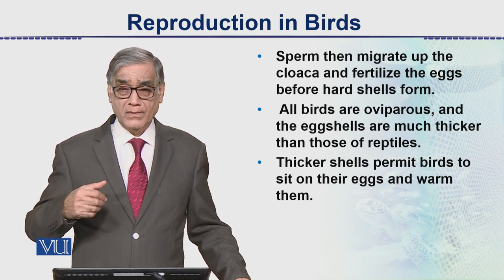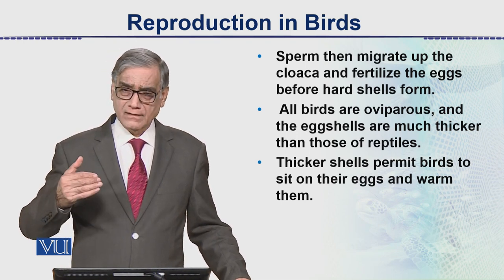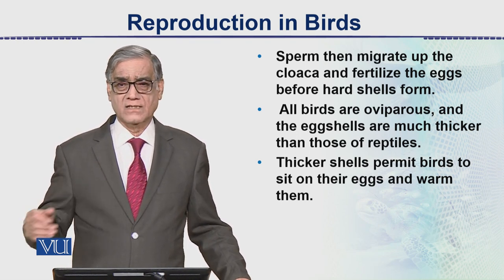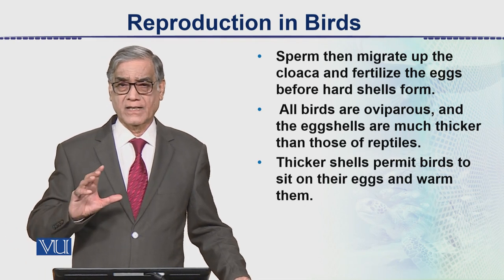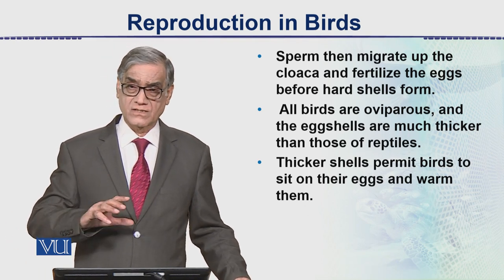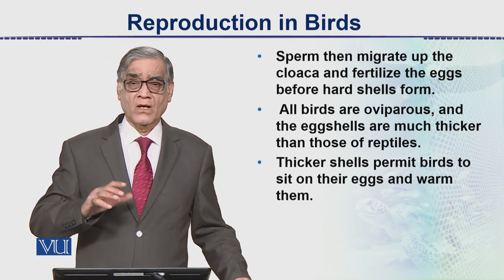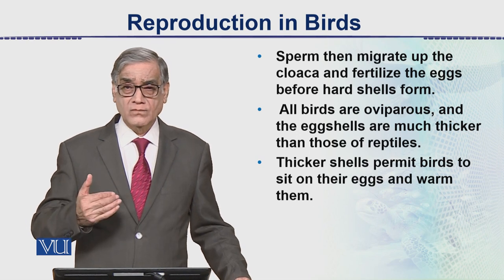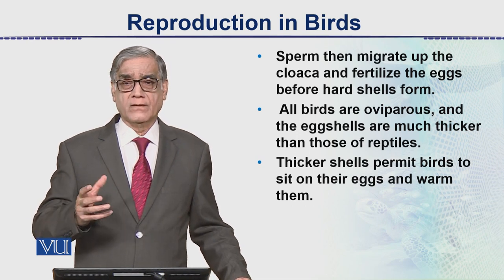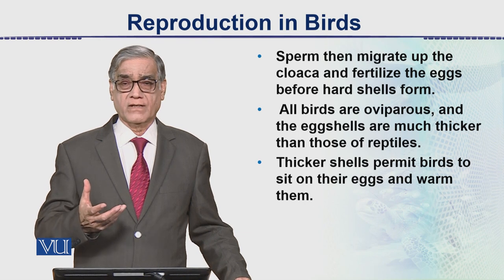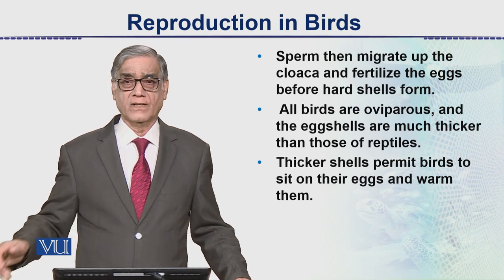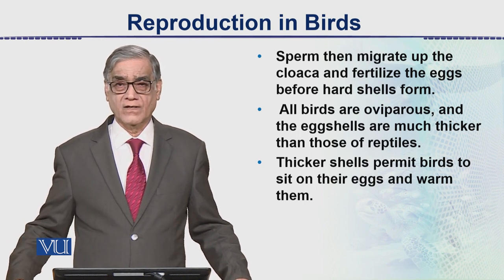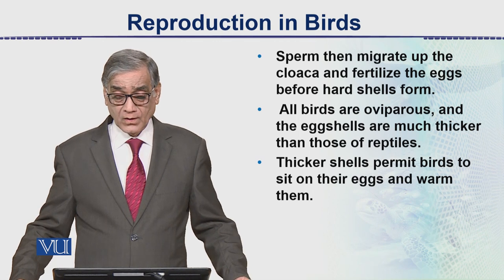The shell of the egg develops via shell glands. Once the shell is formed and the egg is laid, it becomes a well-protected house inside which further development takes place.